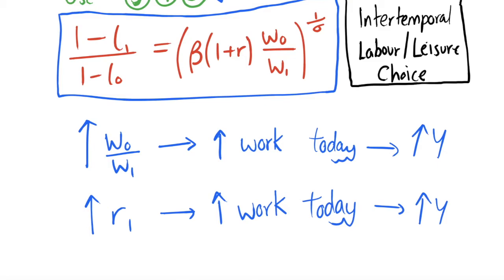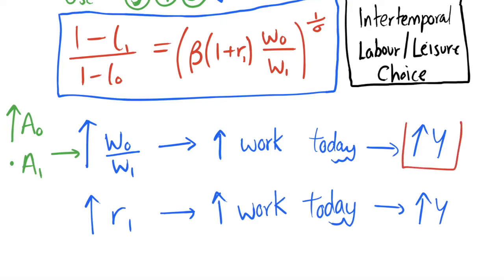This equation contains r1. Consider that we increase our relative wage today — a temporary productivity shock where we increase a0 and keep a1 the same. This raises relative wages in period zero relative to period one. If wages are higher today we want to work more today because we get a high return on labor. We can then work a lot today, save that income, and increase consumption in both periods.